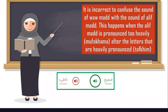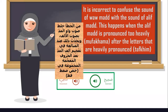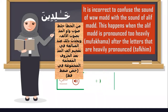Number three: it is incorrect to confuse the sound of alif mad by pronouncing it too heavily — mufakha — after letters that are heavily pronounced — safkha. For example, 'ha-li-deena': the right pronunciation is 'ha-li-deena.' The wrong pronunciation is 'ha-li-doona' — that is wrong.